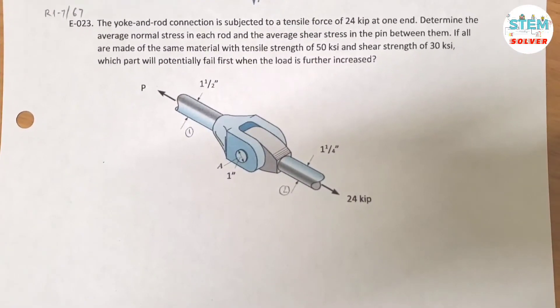The yoke and rod connection is subjected to a tensile force of 24 kip at one end. Determine the average normal stress in each rod and the average shear stress in the pin between them. If all are made of the same material with tensile strength of 50 ksi and shear strength of 30 ksi, which part will potentially fail first when the load is further increased?